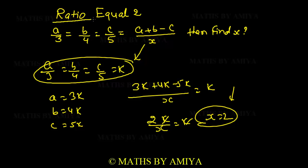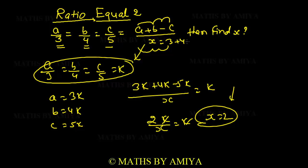Now, what is the shortcut? If all ratios are equal and we're looking for (a+b-c), if you do anything in the numerator, we do the same in the denominator — the ratio does not change. So a+b-c in the numerator means 3+4-5 in the denominator, which is 2.